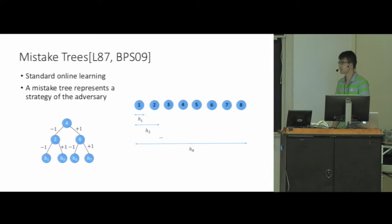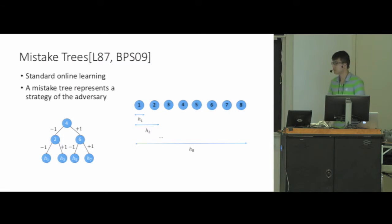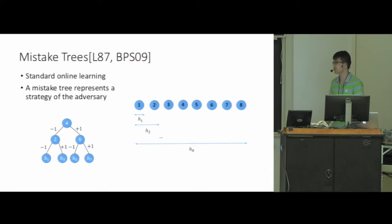To think about this problem, we take a step back to look at traditional online learning, where a notion called the mistake tree is considered. The mistake tree represents a strategy of the adversary. A mistake tree is a complete binary tree where its internal nodes correspond to examples and its leaves correspond to classifiers, and each leaf is consistent with the path from the root to the leaf.